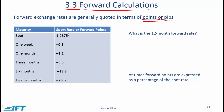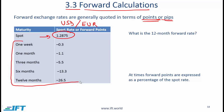A spot rate is the rate that is in effect now. In our example here, which is based on the USD-euro exchange rates, the spot rate is 1.2875. The forward rate is the rate that we lock in today for a transaction in the future, and these numbers over here give us various forward rates.